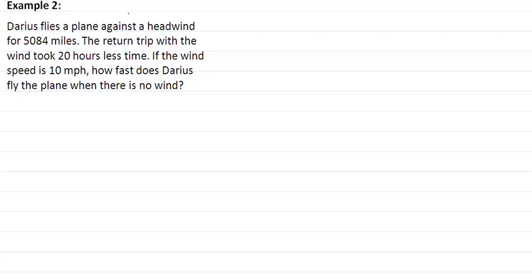Now in our second example, Darius flies a plane against a headwind for 5,084 miles. The return trip with the wind took 20 hours less time, and the wind speed is 10 miles per hour. So if he's flying against the wind, that's going to be taking off his speed, so we have r minus 10 times the time gives us the distance of 5,084. For our second equation he's going with the wind, so it adds to his speed, and the return trip took 20 hours less, so that's t minus 20 equal to 5,084. We want to solve for rate, so we divide by r minus 10 here and r plus 10 here.